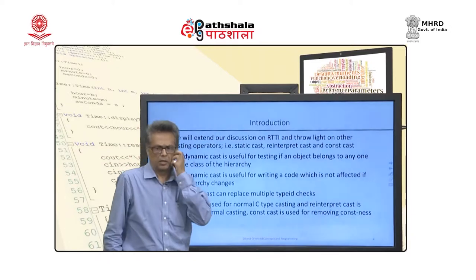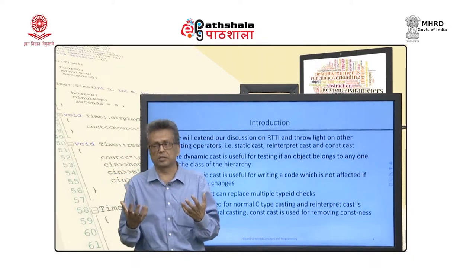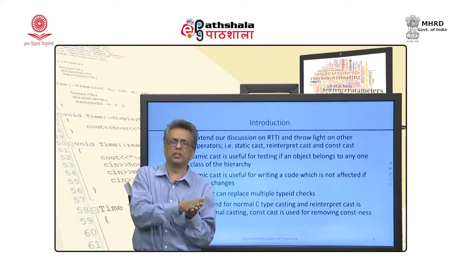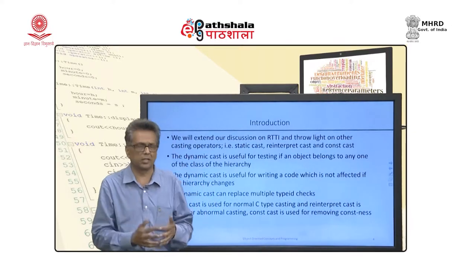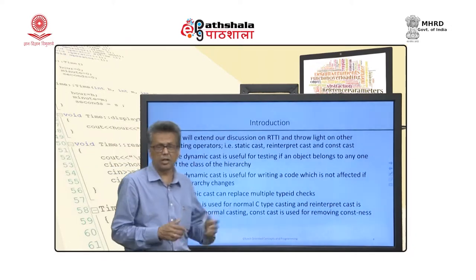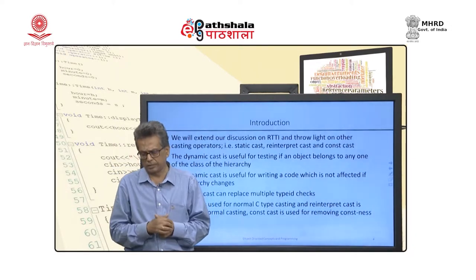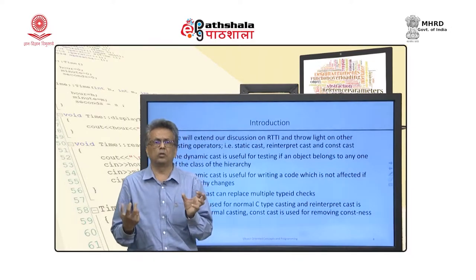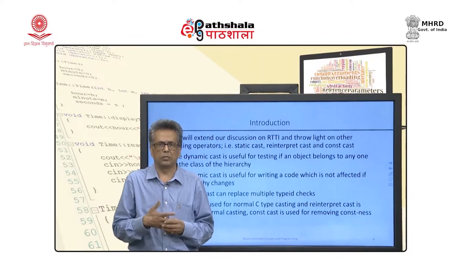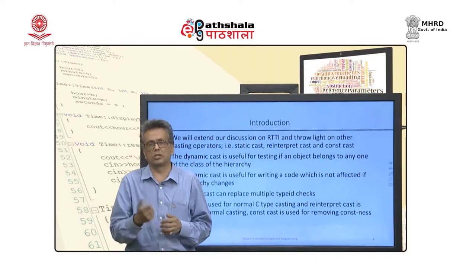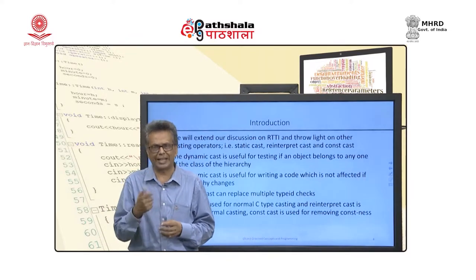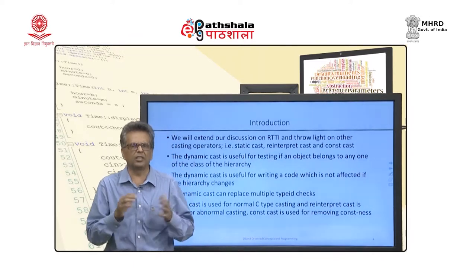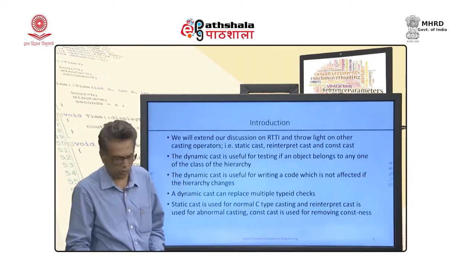Static cast is used for normal C-type casting. Reinterpret cast is used for unconventional pointer-to-integer or integer-to-pointer casting. Const cast is a special cast that converts contextual const values — values that are non-const before entering a function but become const in that context — back into non-const values. We will see examples of all of them.